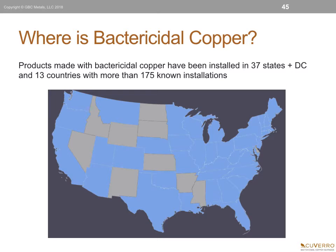Where is bactericidal copper being used? Products made with bactericidal copper have been installed in 37 states plus DC and 13 countries, with more than 175 known installations. These include Pullman Regional Hospital in Washington, Kaiser Permanente and LA King's Training Center in California, Chicago Prostate Cancer Center in Illinois, Grinnell Regional Medical Center in Iowa, Shriners Hospital in Texas, Cancer Treatment Centers of America in Atlanta and Phoenix, Memorial Sloan Kettering Cancer Center and the Pingree School in New York, Winnie Palmer Hospital and the Breakers Hotel Resort in Florida, Berkeley Medical Center, Mayo Clinic Hospital, Regency Hospital, U.S. Olympic Training Center, and many more.